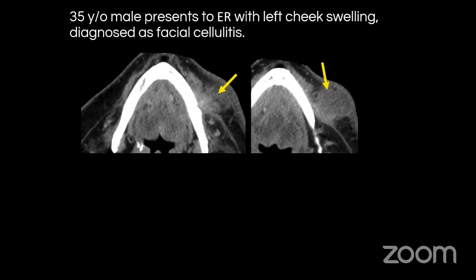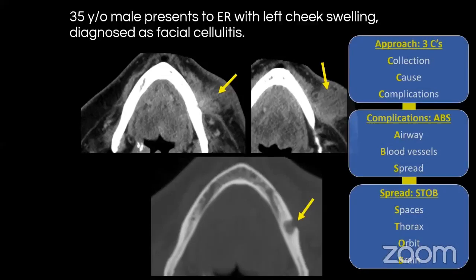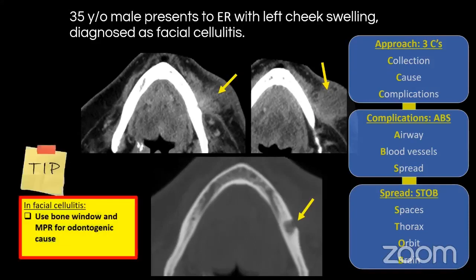Once you see the collection, find the cause. You must use your bone algorithm — in facial cellulitis you need to think of two etiologies: sinusitis or dental infection. In this case, using the bone algorithm you'll see an odontogenic infection: a radiolucency around one of the roots of the mandibular teeth where it eroded through the cortex, causing the infection. My take-home message: always use the bone window in facial cellulitis cases and consider multi-planar reconstructions, as these radiolucencies can be very tiny.